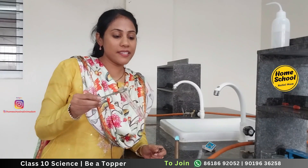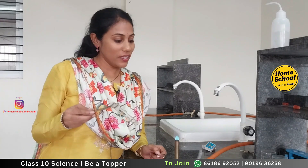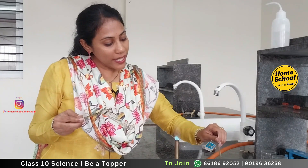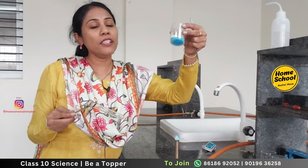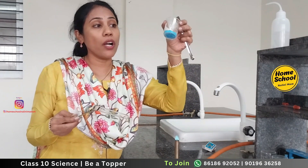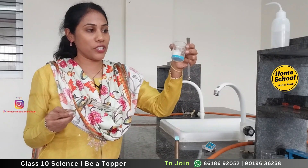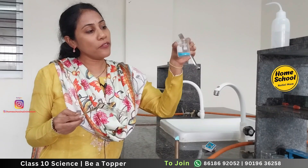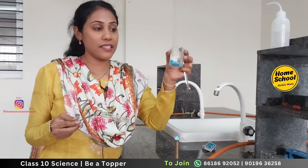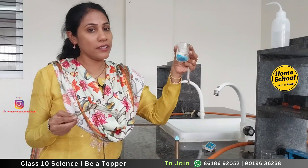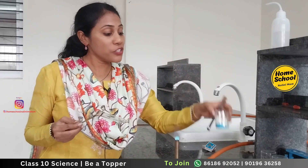In this demonstration on water of crystallization, look at the copper sulfate crystals which are blue in color. The blue color is because water of hydration — also called water of crystallization — is present. As long as the water of crystallization is there, the blue color exists. Once it goes away, the blue color would become colorless.